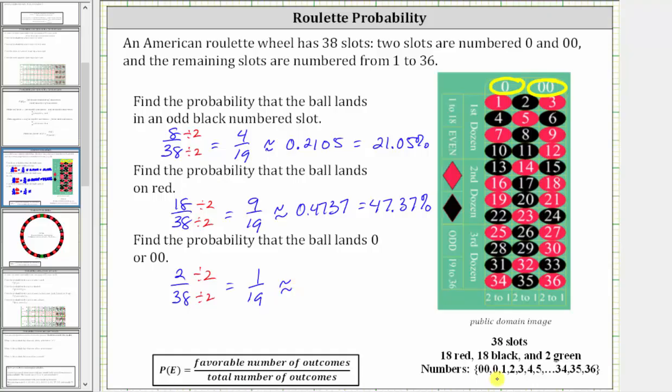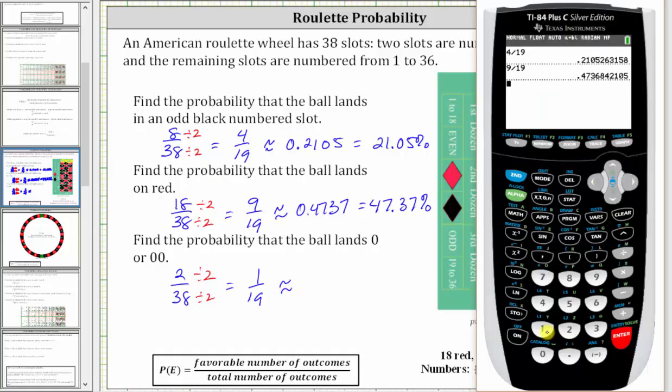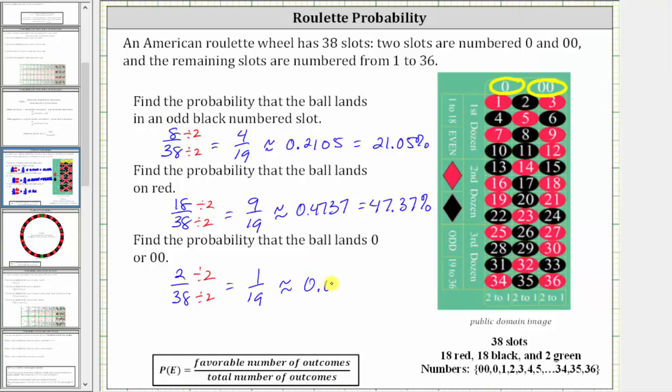Again, let's convert this to a decimal. One divided by 19. To four decimal places, we have approximately 0.0526, which is equal to 5.26%.